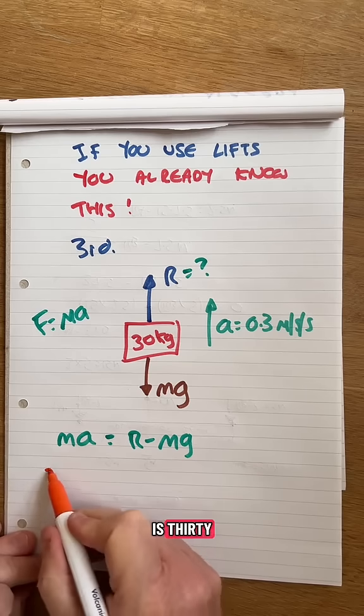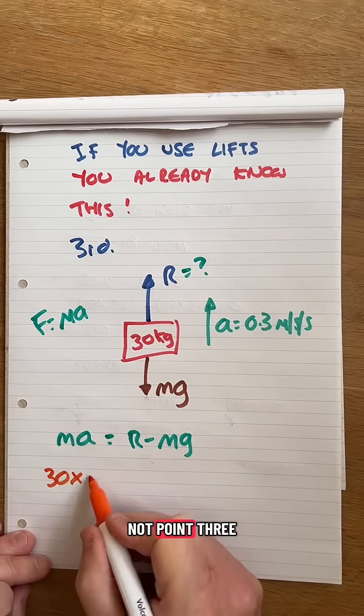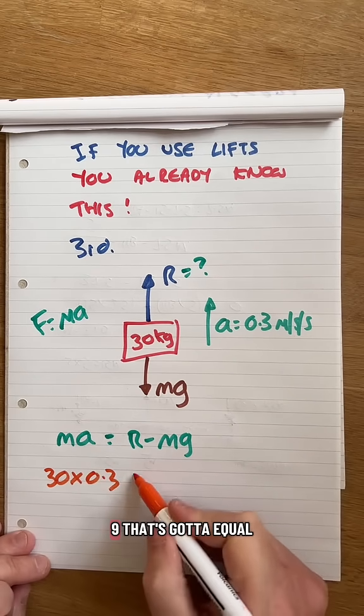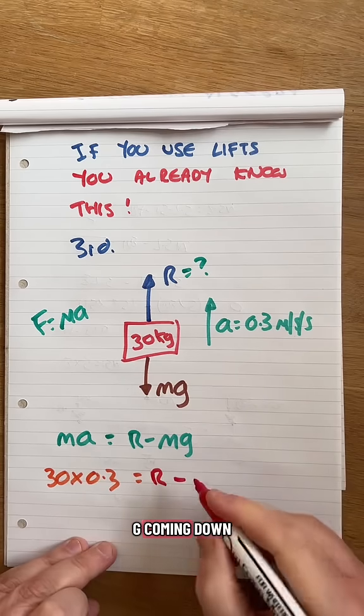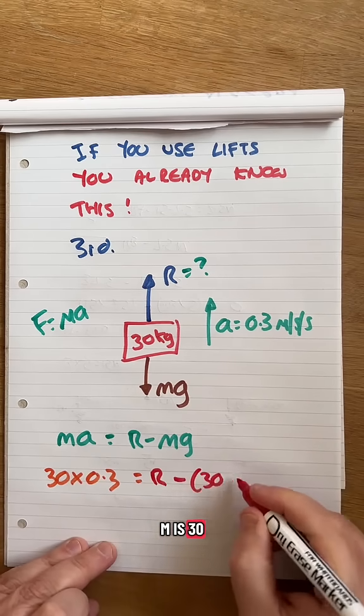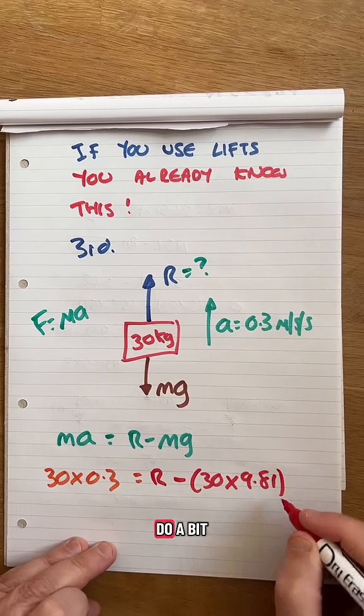Put your numbers in. My mass is 30, my acceleration is 0.3. That gives me 9. That's got to equal R, which we don't know, take away M G coming down. M is 30, G is gravity. Do a bit of maths.